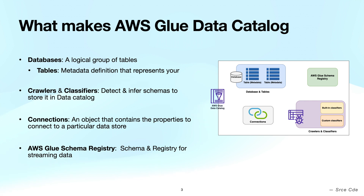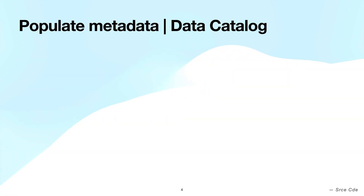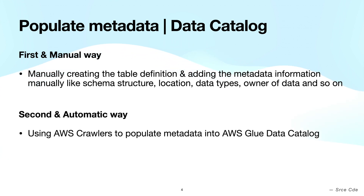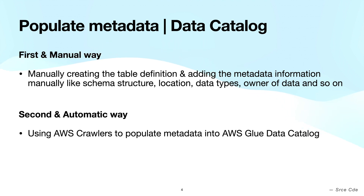Now the question is how to get metadata information into the data catalog. There are two ways to gather and store that information. The first is to create the database table definition and enter all the information about the data manually — this is a more complex way. The second and simpler way is to leverage crawlers to populate the metadata information automatically, though we still need to create the database manually.